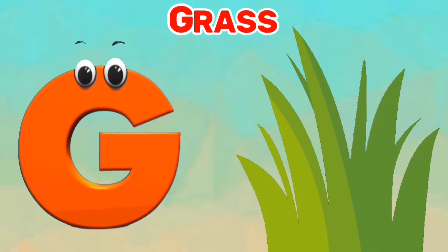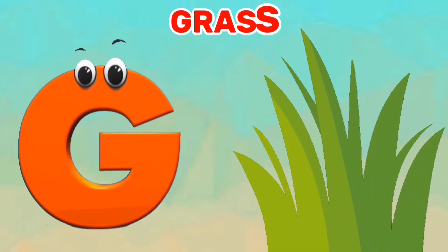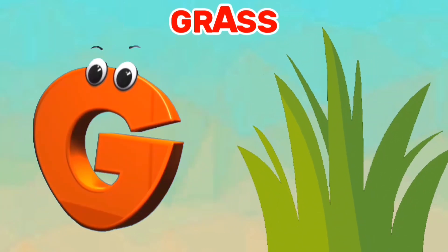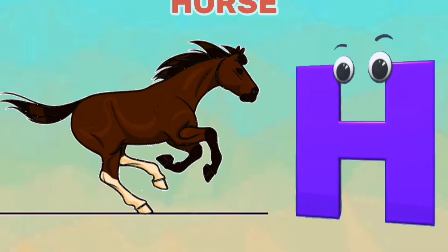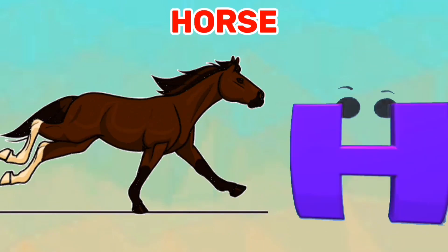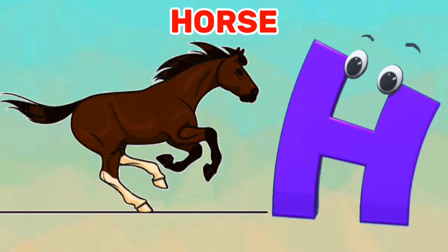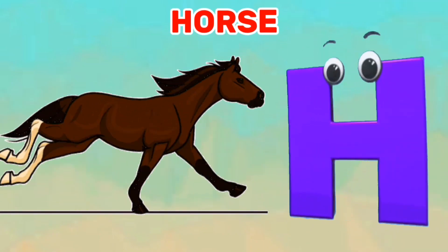G is for grass, g, g, grass. H is for horse, h, h, horse.